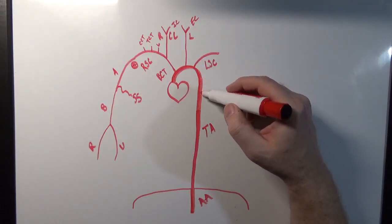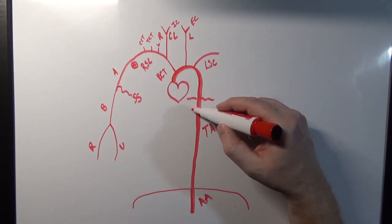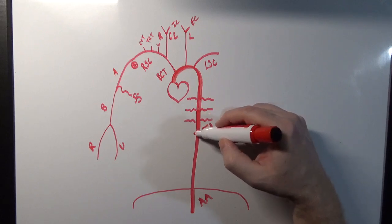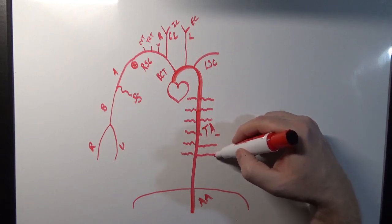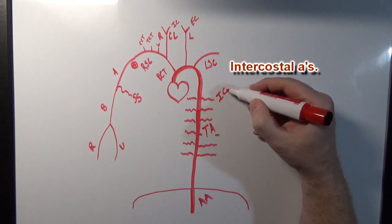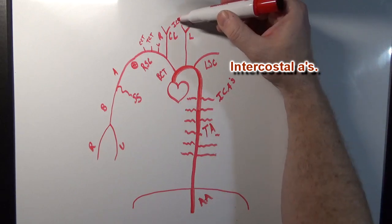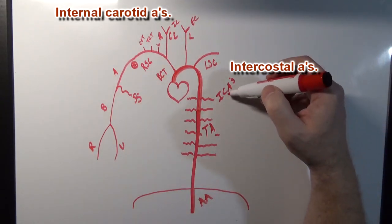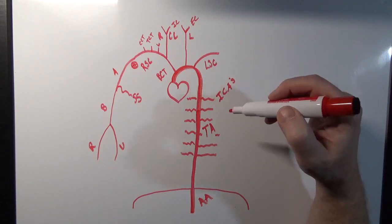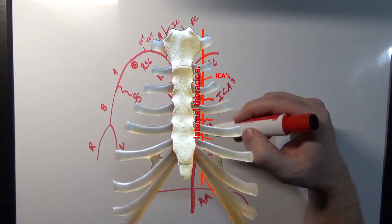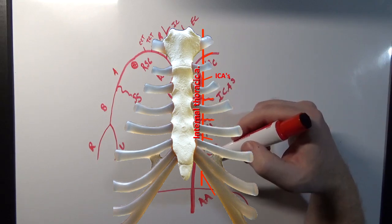Going back to the thoracic aorta, it's going to have branches that will pass between the ribs. Those branches that go between the ribs are called the intercostal arteries — the ICAs. Remember we have the ICs up here, the internal carotids — they're different from the intercostal arteries. Those intercostal arteries will circle around the ribs and join up in the front to a blood vessel that runs just lateral to the sternum, and that blood vessel is going to be the internal thoracic artery.